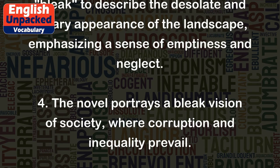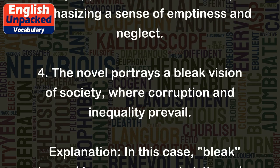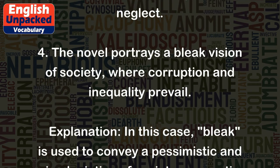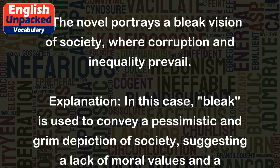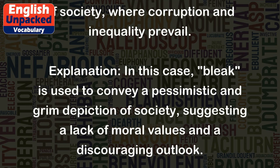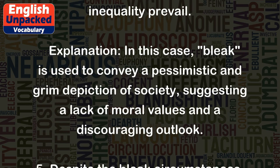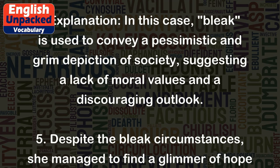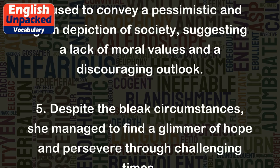4. The novel portrays a bleak vision of society, where corruption and inequality prevail. Explanation: In this case, bleak is used to convey a pessimistic and grim depiction of society, suggesting a lack of moral values and a discouraging outlook.